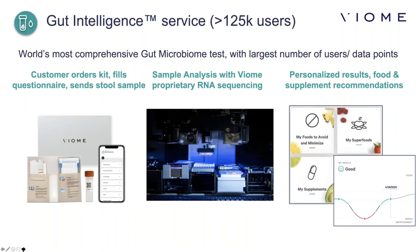The main thing we'll talk about is our gut intelligence test. We've now done over 125,000 people around the world. It's the most comprehensive gut microbiome test, and we have the world's largest database of metatranscriptomic data. The customer orders a kit, answers a questionnaire, sends the stool sample back to us, we do an analysis using proprietary RNA sequencing, and then you and the patient get personalized food and supplement recommendations.